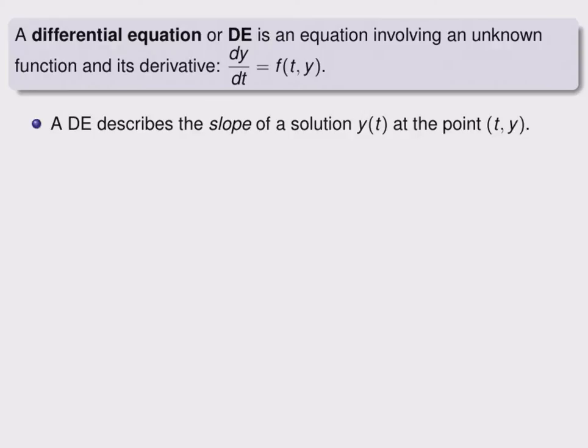A DE describes the slope of a solution y(t) at the point (t,y). We can see this by reading the differential equation as the slope of y is given by some function involving both t's and y's.